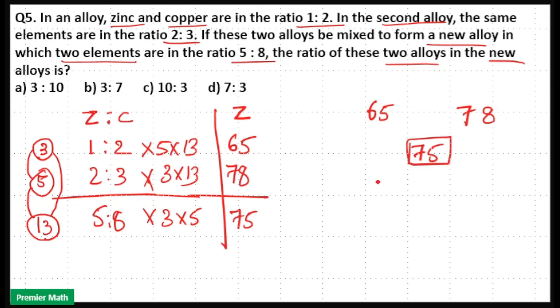By allegation method, 75 minus 65 equals 10, and 78 minus 75 equals 3. So the answer is 3:10. Option A is the answer.